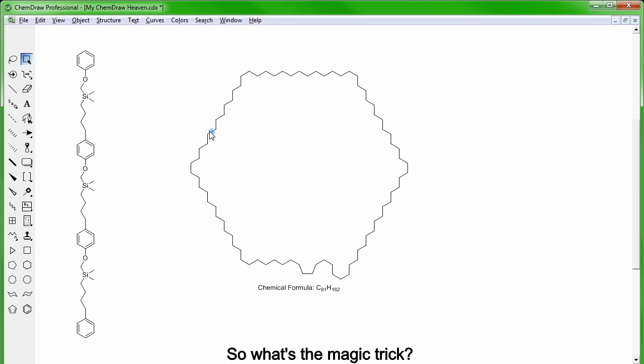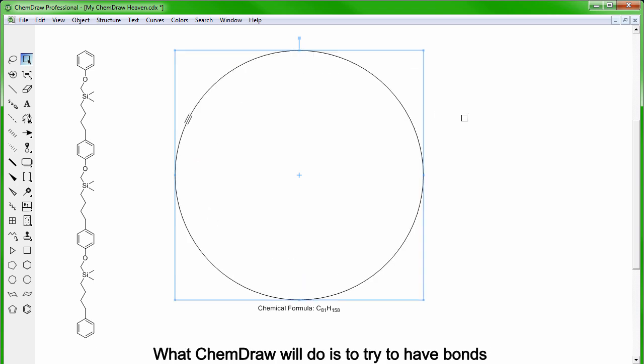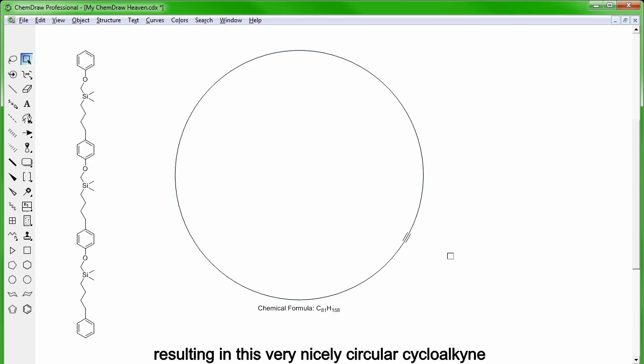So what's the magic trick? The magic trick is we're going to add a triple bond anywhere on the structure. And now we hit CTRL-SHIFT-K multiple times to clean up. What Chemdraw will try to do is to have bonds as flat as possible next to the triple bond, resulting in this very nicely circular cycloalkane as we see it on the screen. We can now go over the triple bond and press 1 to go back to a single bond.